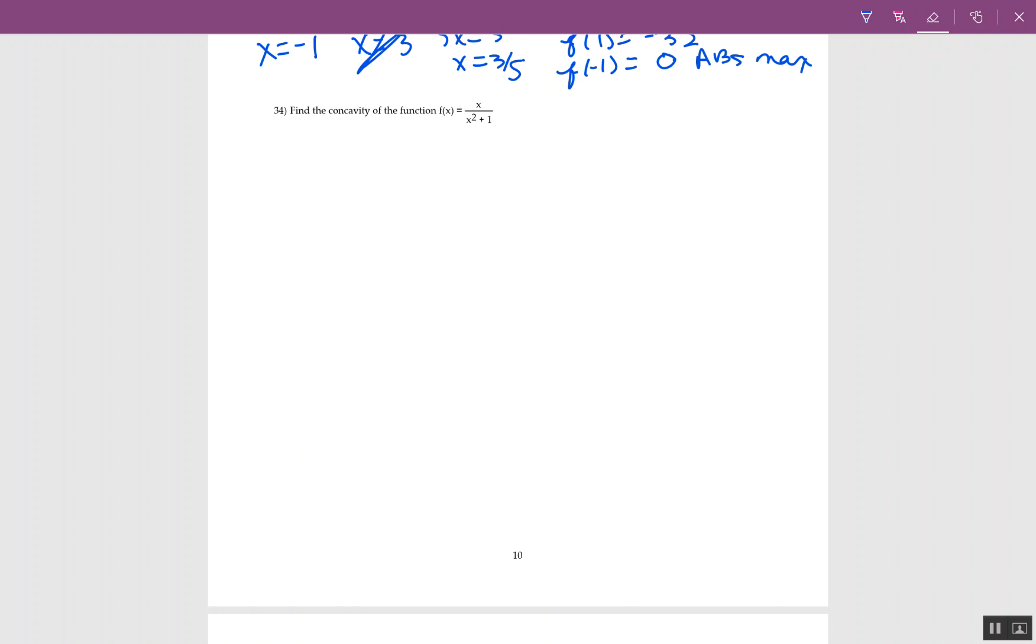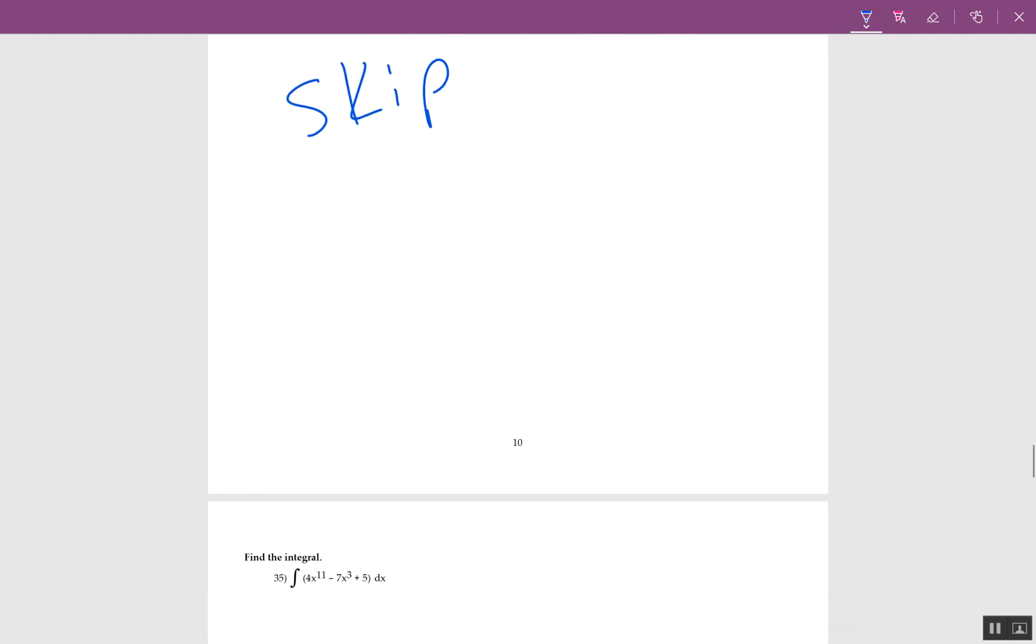We're going to continue the review. After looking at it, I decided a couple problems were too hard and I highlighted them. The first one I would skip is number 34. I'm not going to do it because I wouldn't put it on the test. The factoring was just too time consuming for four points on the final, so we're skipping that one.